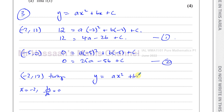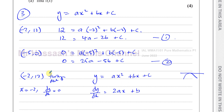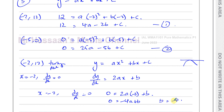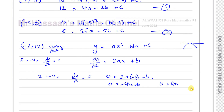y equals Ax squared plus Bx plus C, and dy/dx tells us the gradient. At the turning point the gradient equals 0, so the tangent is horizontal. Differentiating: dy/dx equals 2Ax plus B. Setting dy/dx equal to 0 at x equals negative 2: 0 equals 2A times negative 2 plus B, giving 0 equals negative 4A plus B, so B equals 4A — that's equation 3. Now I can solve these equations.